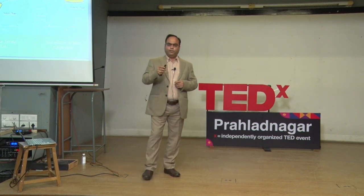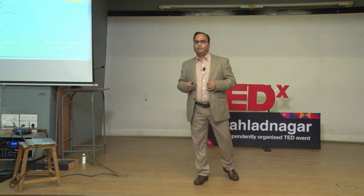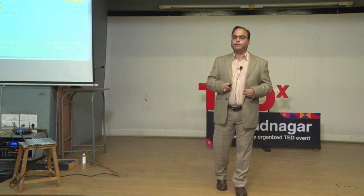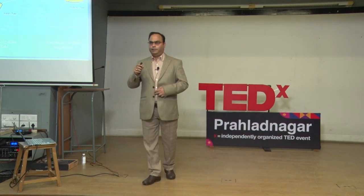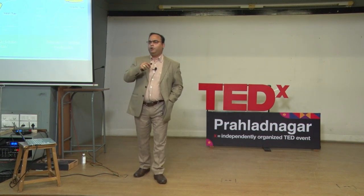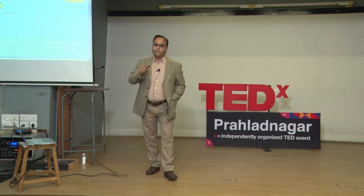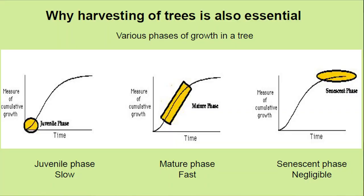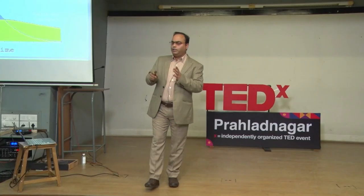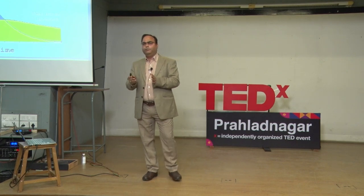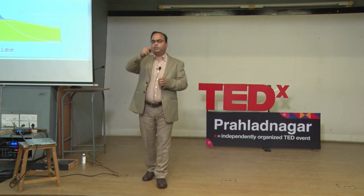The third point is why harvesting is also important. We do not understand the growth cycle of a tree well. It has three distinct phases: the juvenile phase, which grows at a slower rate; the mature phase, lasting a few decades, with very fast growth; and the senescent phase, where the tree remains green but does not grow much. If you measure the increase in volume every year and plot it, this is known as Current Annual Increment — it goes up and then comes down.